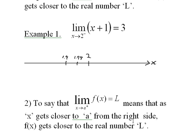To say that the limit of f of x as x approaches a from the right — that's what the plus sign means, from the right — equals L, means that as x gets closer to a from the right side, f of x gets closer and closer to the real number L.